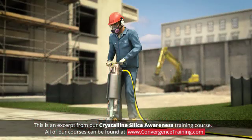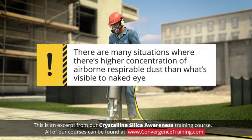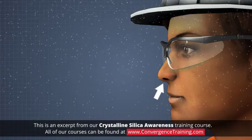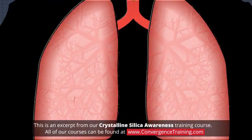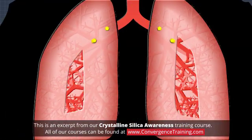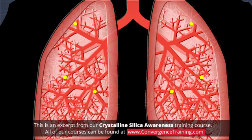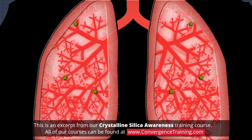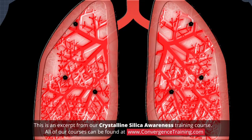Most dust-generating activities produce a mixture of visible and respirable particles. There are many situations where there is a higher concentration of airborne respirable dust than what is visible to the naked eye. When crystalline silica is inhaled, the fine particles are drawn into the lungs and become trapped. These particles do not break down, and over time they irritate and scar lung tissue, causing severe complications.